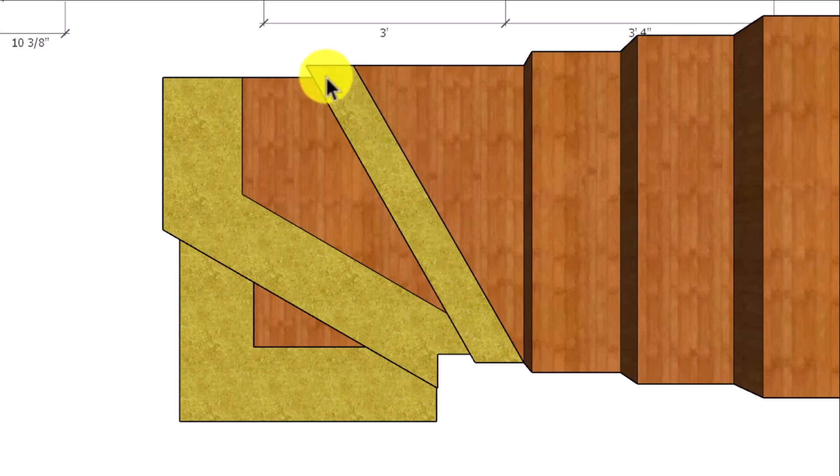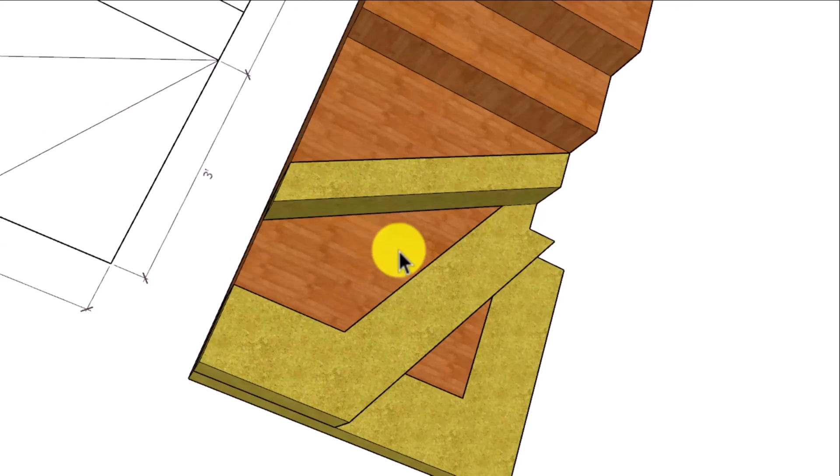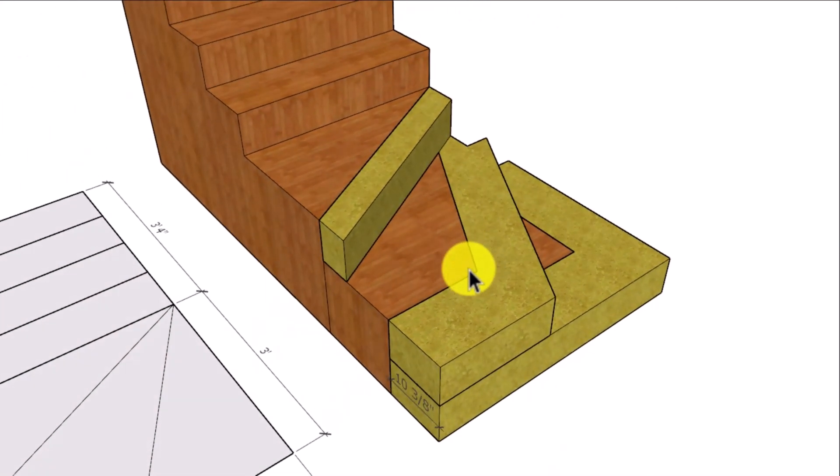For example you might need to add a section like this, section like this, and a section like this. Again this area will need to be located underneath the finishing of the stairway.